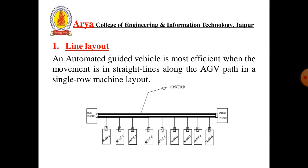First is Line Layout. An automated guided vehicle is most efficient when movement is in a straight line along the AGV path (automated guided vehicle path) in a single row machine layout. In a double row machine layout, machines are arranged on both sides. The load center is on the left-hand side and the unload center is on the right-hand side, connected with conveyor belts having work stations from 1 to 9 on one side.